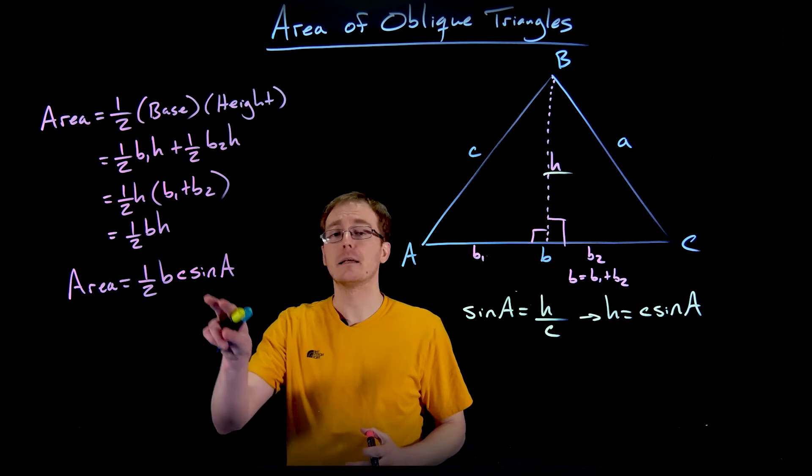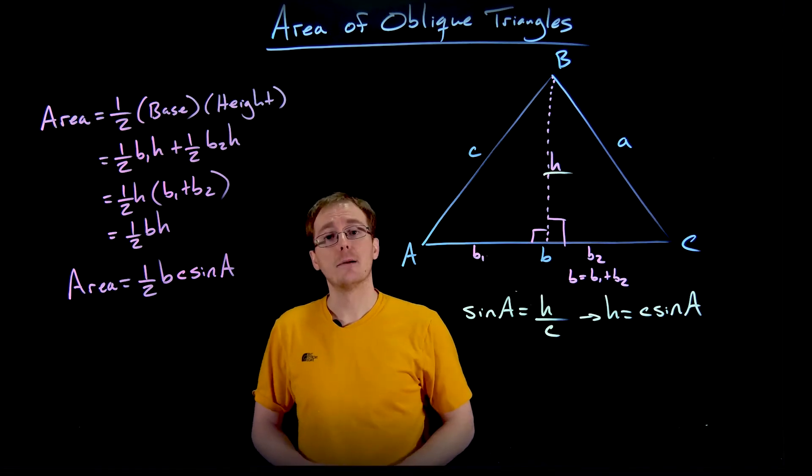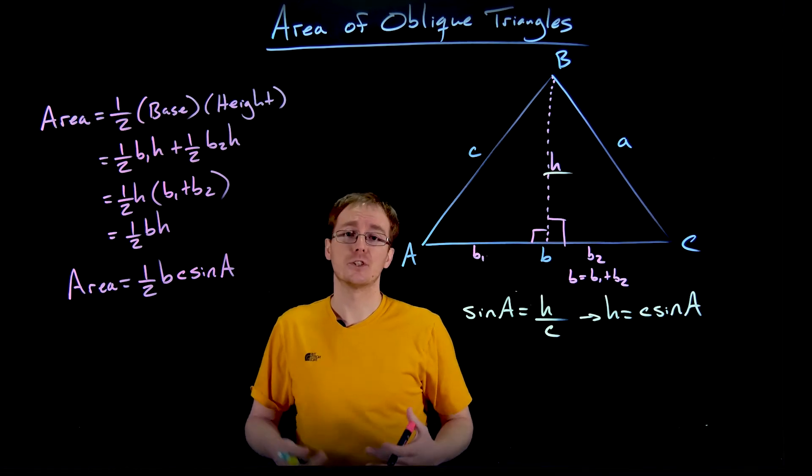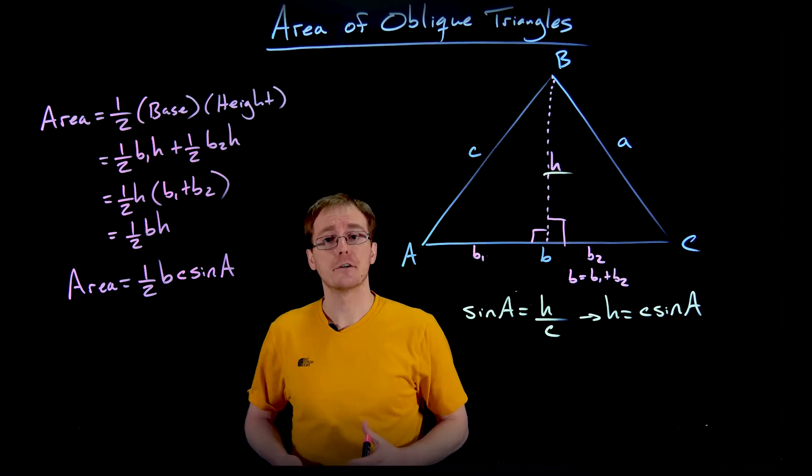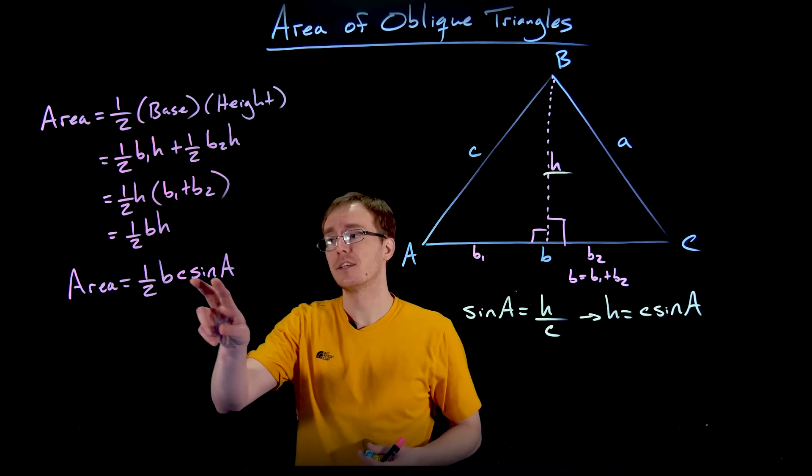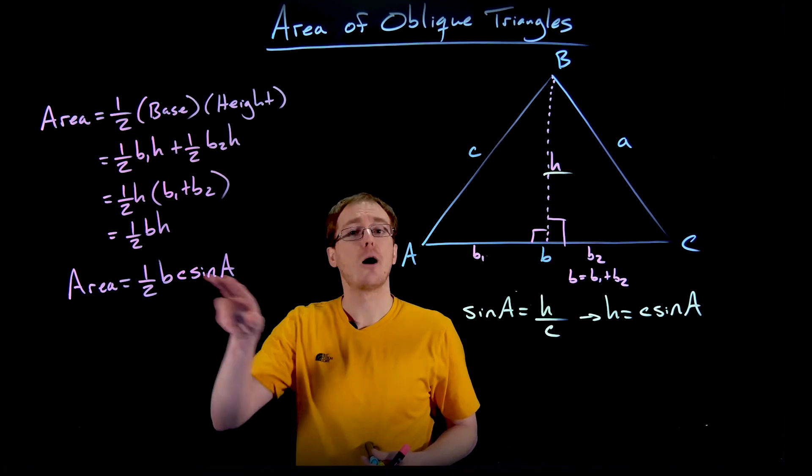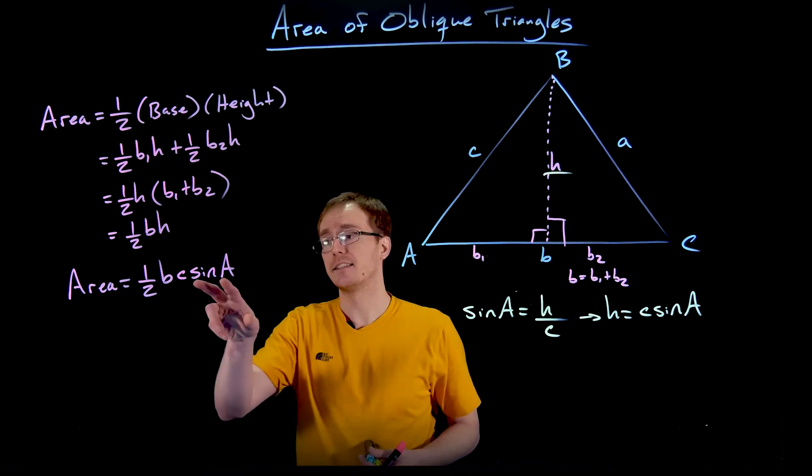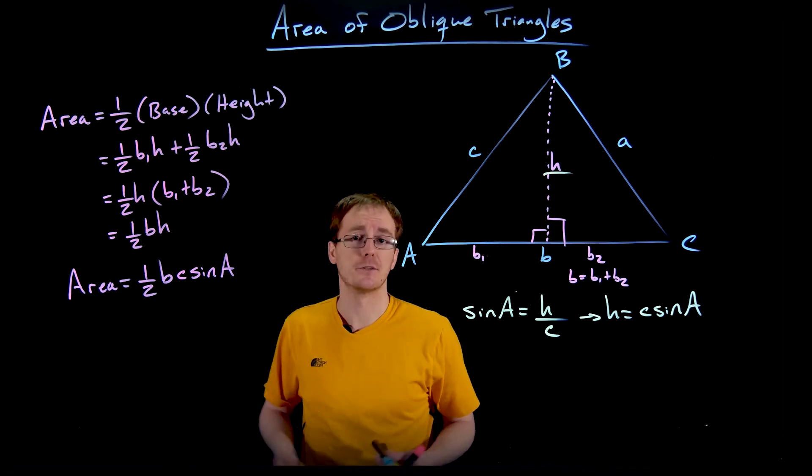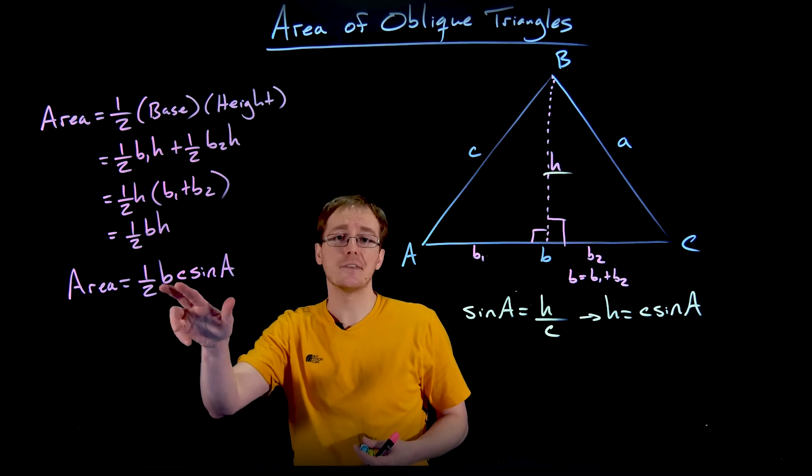And the way I remember this area formula that also helps us generate the other versions of this area formula is it's always one half, the product of two side lengths, and then multiplied by sine of the angle that is not opposite of either of those side lengths. It's the other letter that's missing, right? So you should always have an A, B, and C showing up. If B and C are our side lengths, then our angle is going to be A.